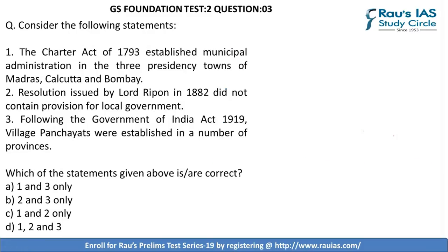Question 3 asks us to consider three statements with respect to the development of local governance in the country from the British era. The first statement reads: the Charter Act of 1793 established municipal administration in the three presidency towns of Madras, Calcutta, and Bombay. This statement is correct.